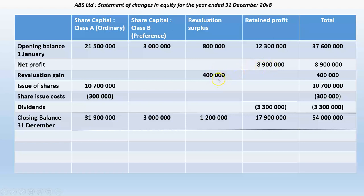Net profit after tax of 8.9 million goes to retained profit and revaluation surplus of 400,000 goes to the revaluation surplus column. Dividends declared reduce retained profit. At year end: ordinary share capital 31.9 million, preference share capital 3 million, revaluation surplus 1.2 million, and retained profit 17.9 million, giving total equity of 54 million. On the statement of financial position, these are shown as separate line items under equity, totalling 54 million rand.